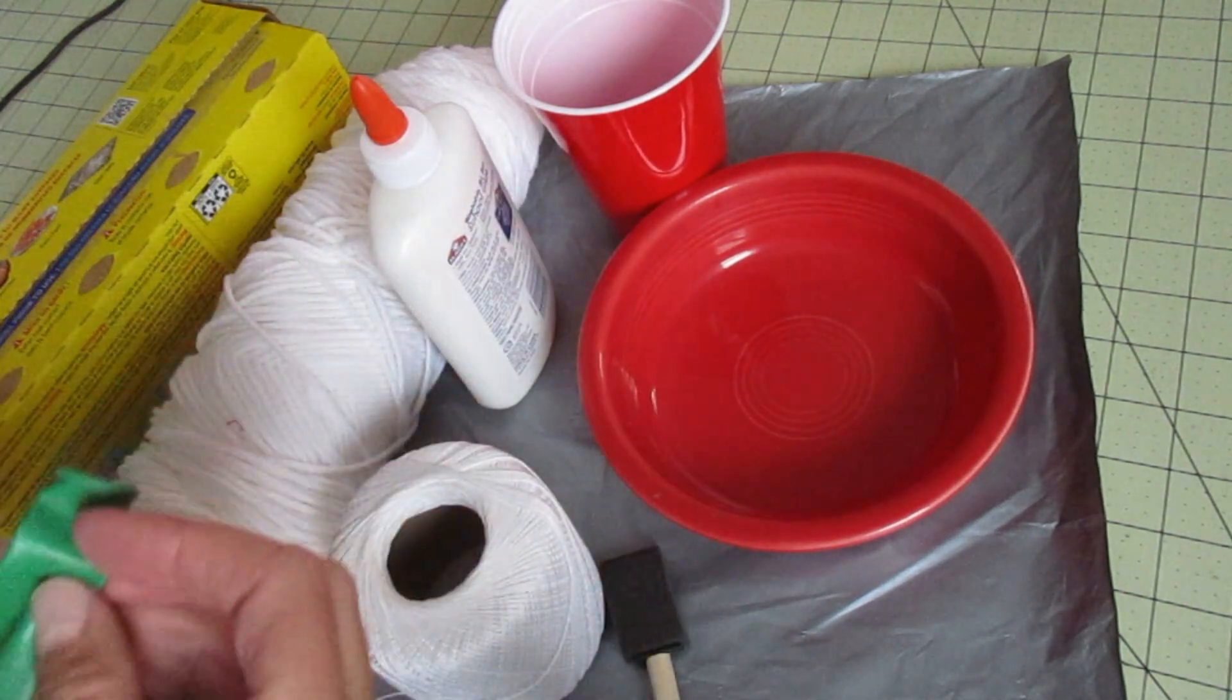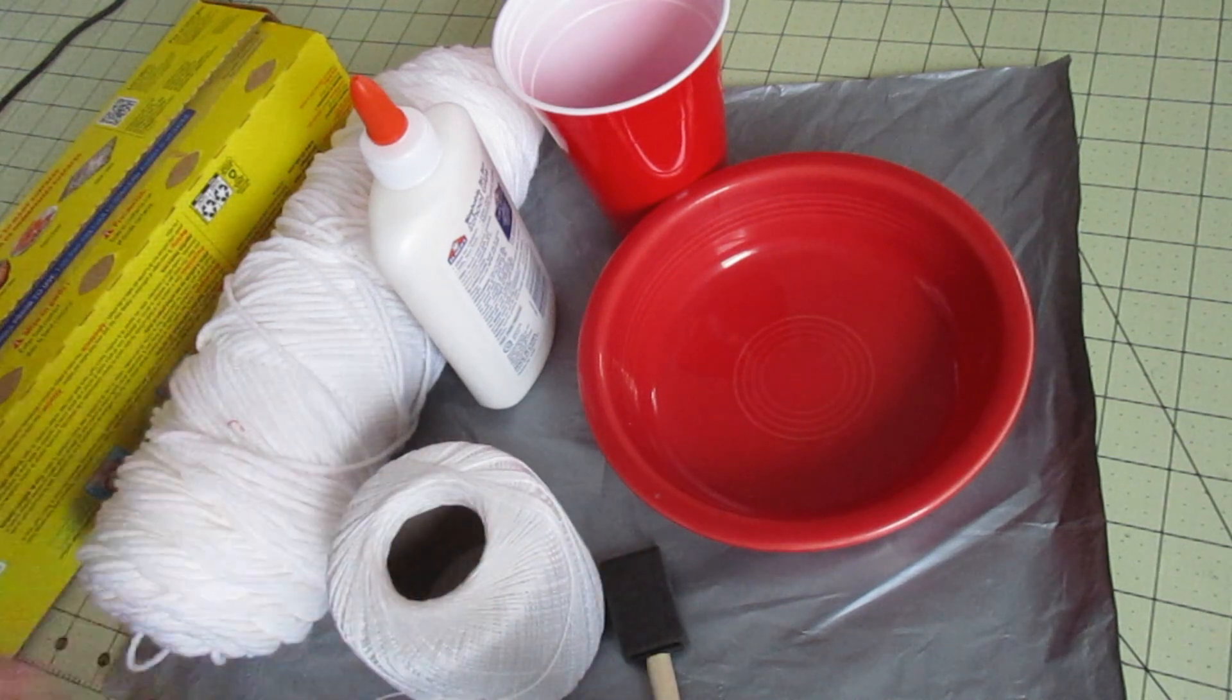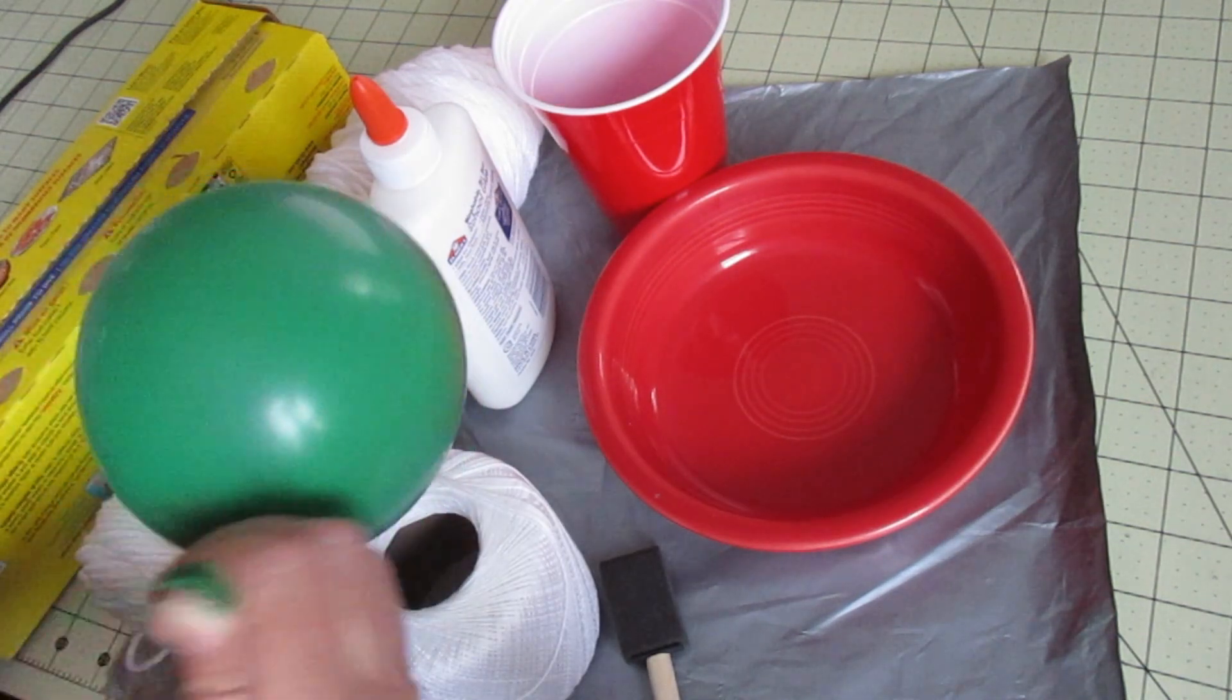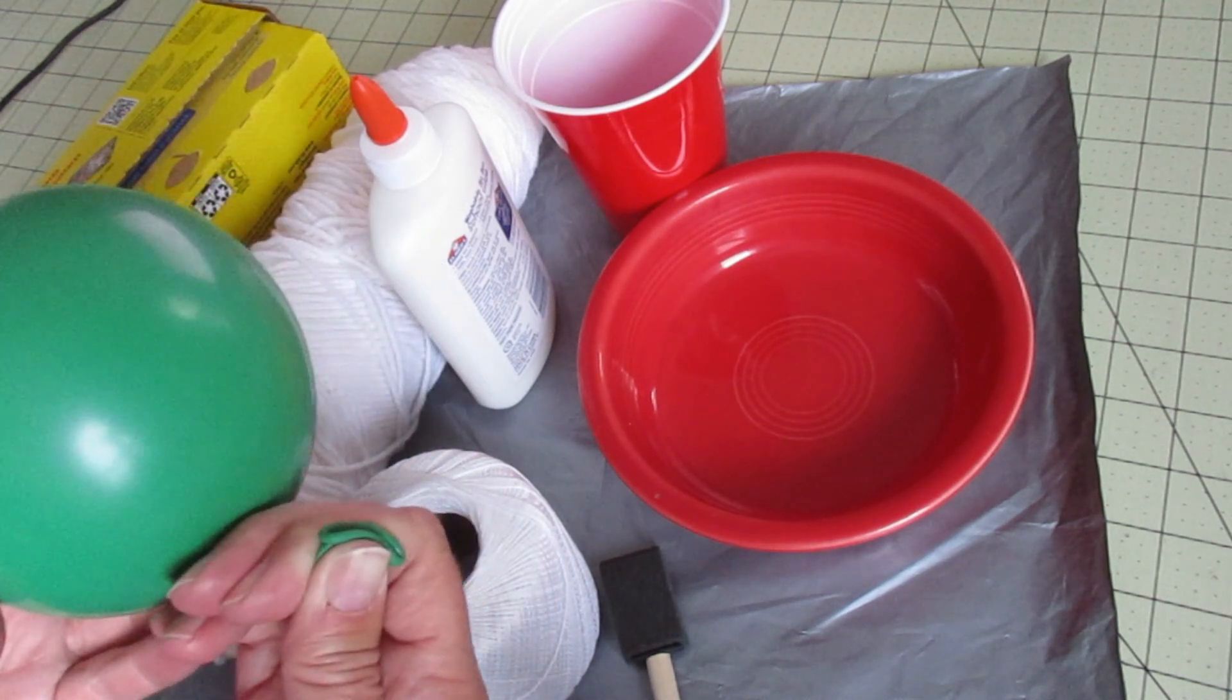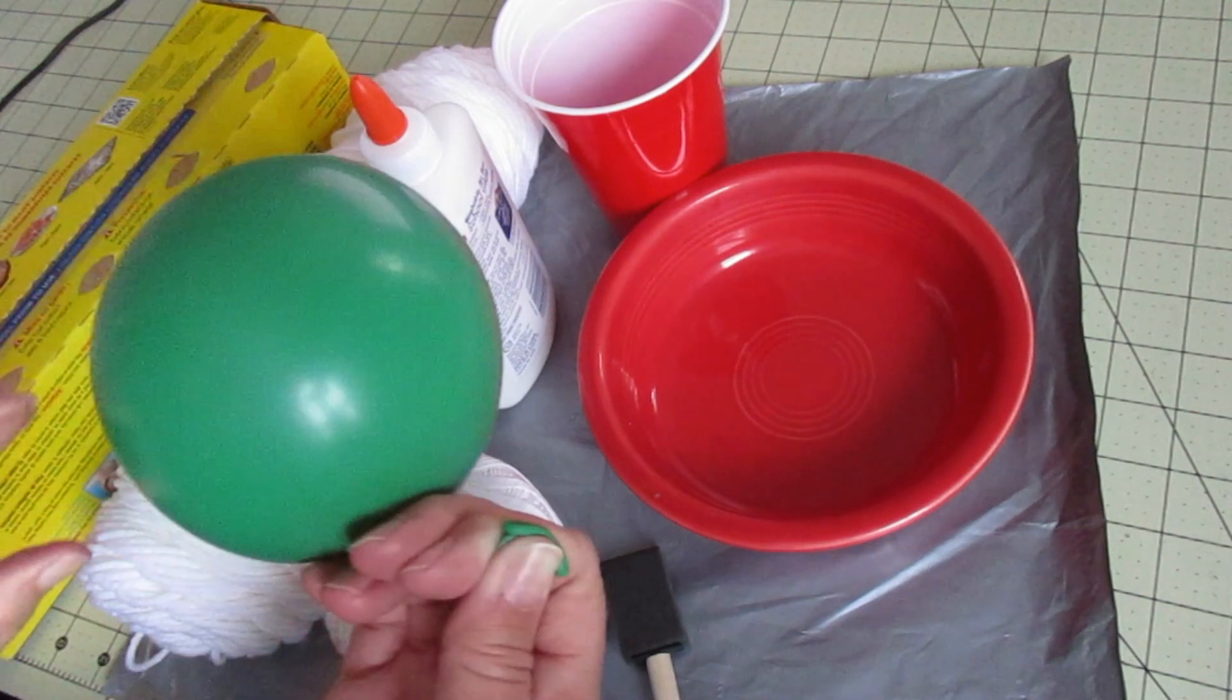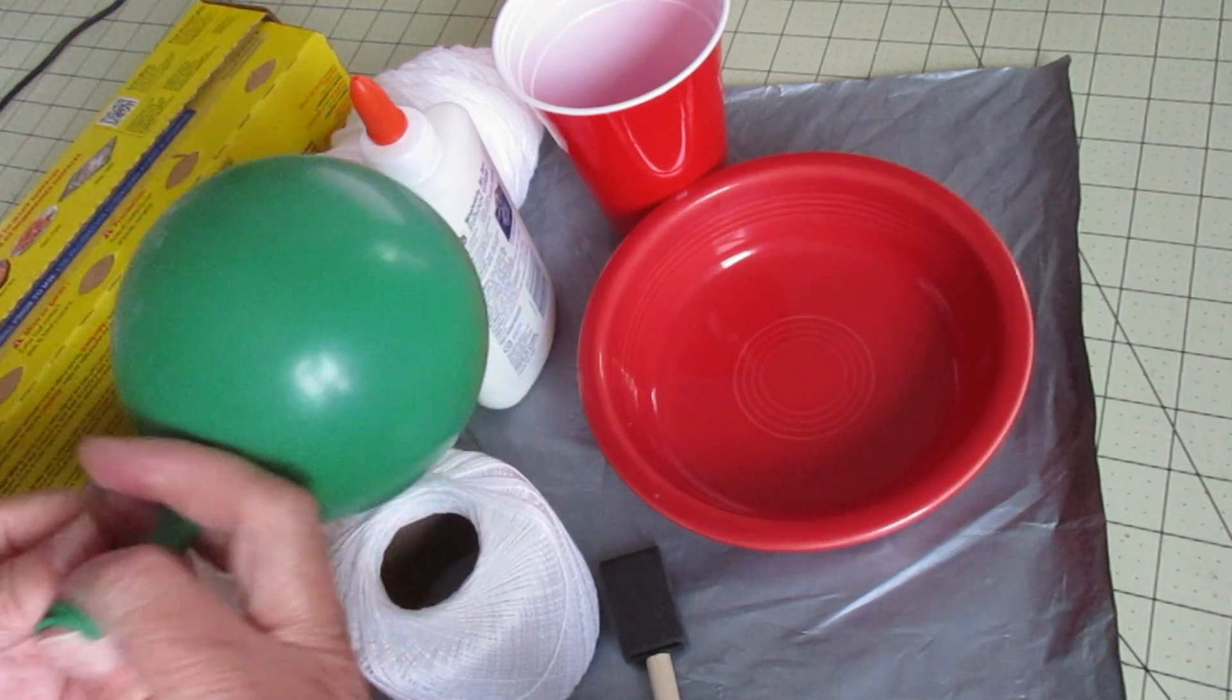The balloon I'm using is a round one. Go ahead and blow that balloon up. You can decide what size you'd like to blow it up. I purchased these round balloons because I want it perfectly round. If you wanted something more oblong you would purchase different balloons. This is the size I'm going to go for. So I'm going to go ahead and tie this off.